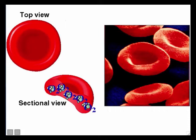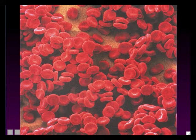Red blood cells can also be called RBCs, or by their scientific name, erythrocytes — erythro means red, and cyte means cell. Red blood cells are also the most numerous of the three formed element types. You have far more red blood cells than white blood cells or platelets — red blood cells outnumber them by about a factor of 1,000 to 1, which underscores how important it is for your blood to carry oxygen.